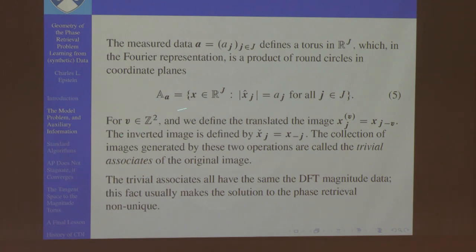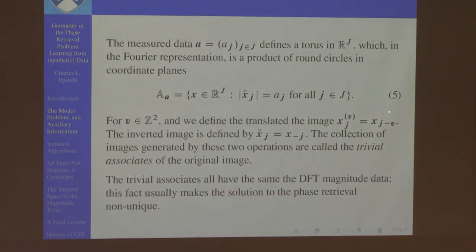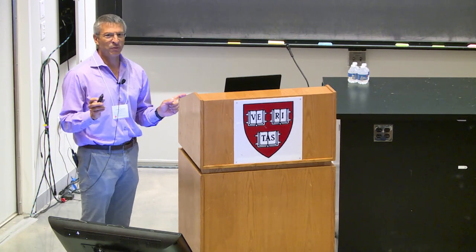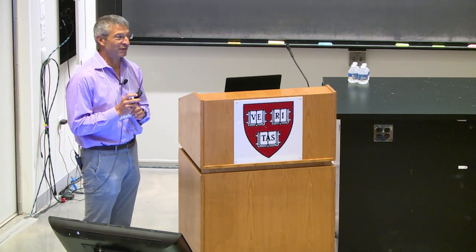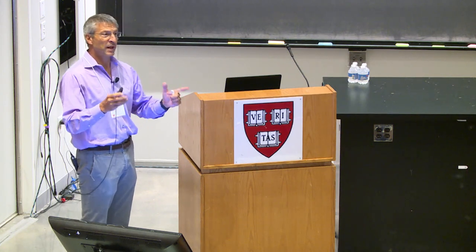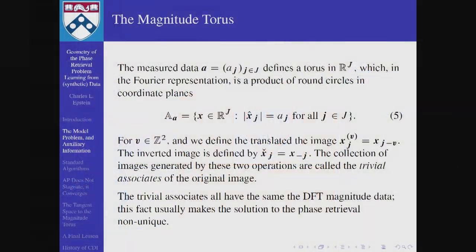We take our image and make it periodic, so we can translate it by any vector — we just move where it's sitting in the physical plane. If we either translate it or reflect it through the origin, replacing X_J with X_{-J}, all of these images have exactly the same modulus Fourier data. So right off the bat we know that uniqueness is a non-trivial issue. Our measurements don't uniquely specify a single image within this family — you can translate them, invert them, or do both. These are called the trivial associates.